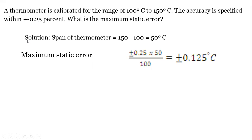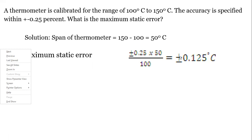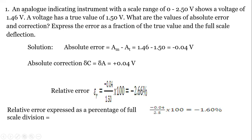Example: A thermometer is calibrated for a range of 100°C to 150°C, with accuracy specified as ±0.25%. The span is 150 − 100 = 50°C. The maximum static error is ±0.25 × 50 / 100 = ±0.125°C, which is applicable over the entire span of the instrument.